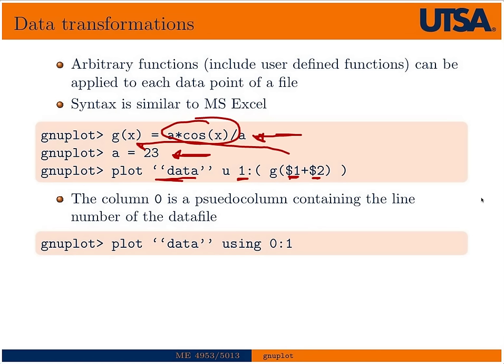Okay. Just so you know, there's also column zero, which is just basically the line number. So, if you wanted to, this right here would plot the first, if you only had one column in a file, you could plot that first column versus the line number to kind of give you a bin plot or something like that. So, that would be an example of the pseudo column zero.